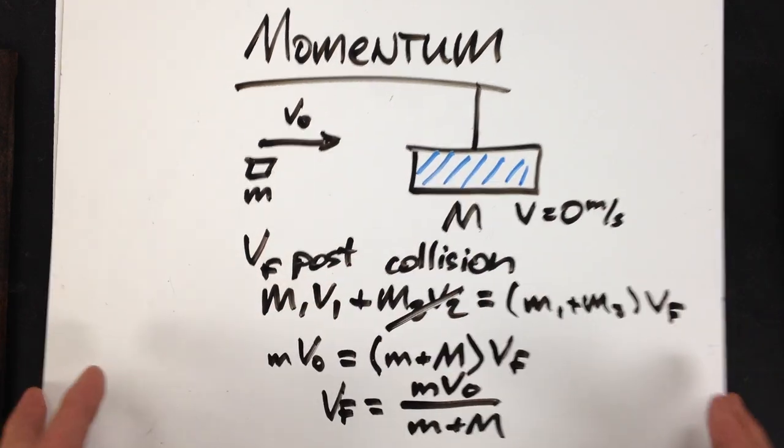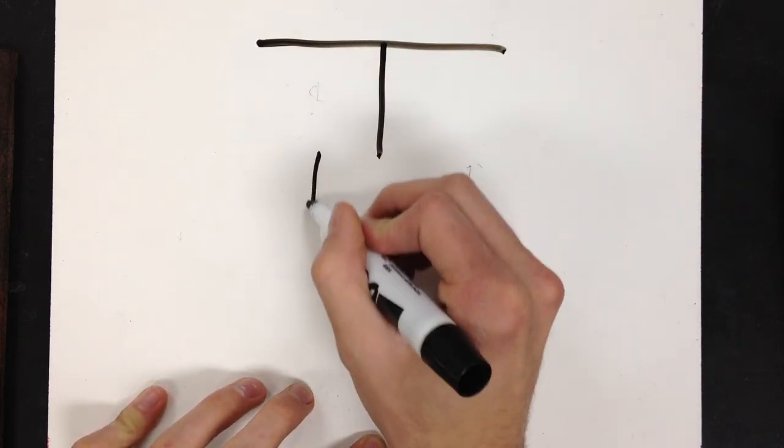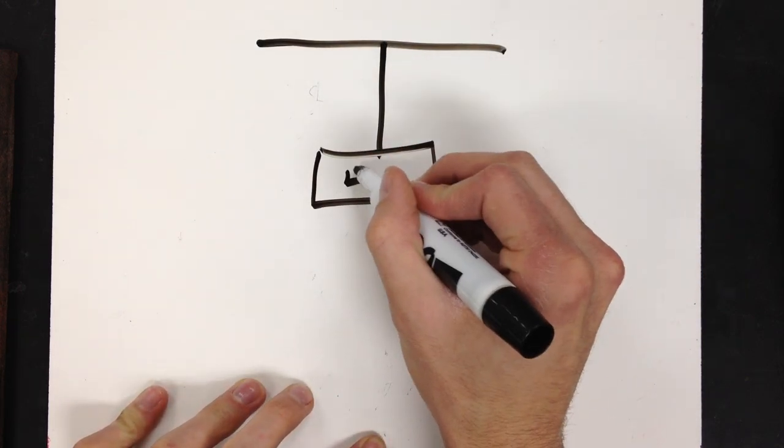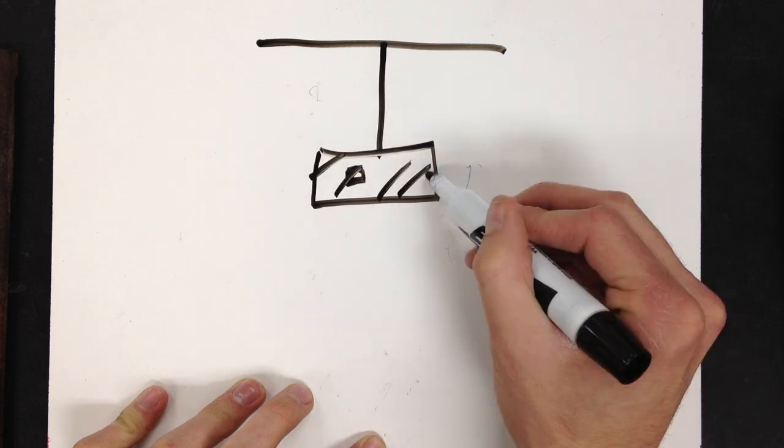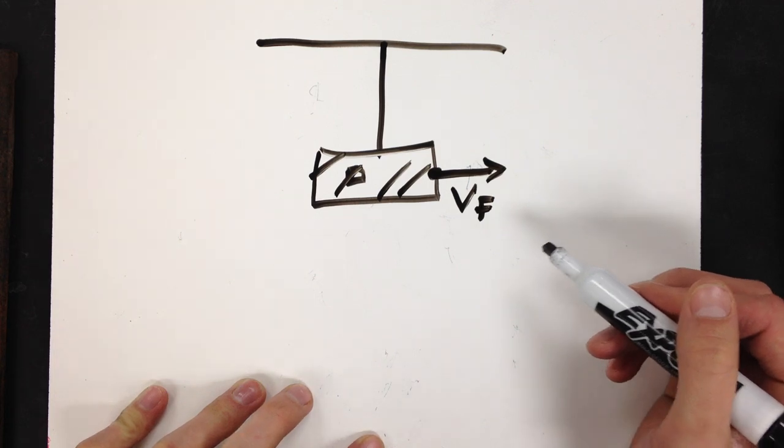Now, speaking of at its lowest point, let's look at a pendulum swing. So, here I've got my bullet block and they are leaving that point with a certain speed v final.